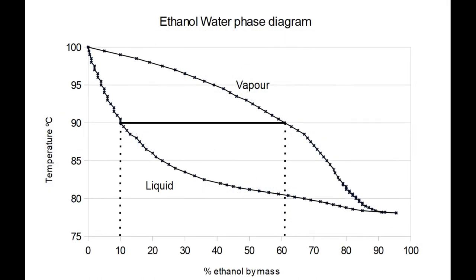Here is the familiar phase diagram of water-ethanol mixtures. The lower curve shows the boiling point of the liquid mixture, and the upper curve is the proportion of ethanol and water that boils off from that mixture. A 10% ethanol in water mixture boils at about 90.5 degrees centigrade, and the vapour that comes off it is about 60% ethanol and 40% water.